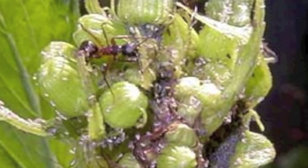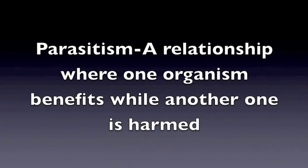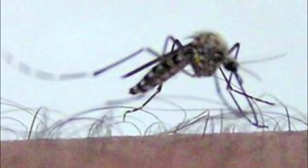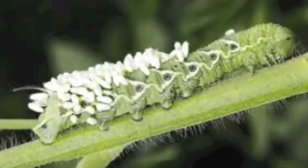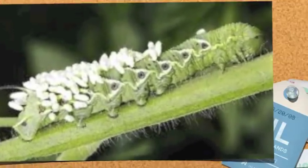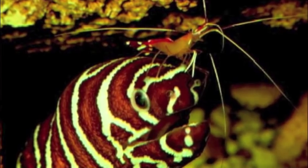The final type of symbiotic relationship I will be discussing today is called parasitism. Parasitism is a relationship where an organism benefits at another's expense. Some commonly known parasites that may come to mind consist of leeches, ticks, and even mosquitoes.